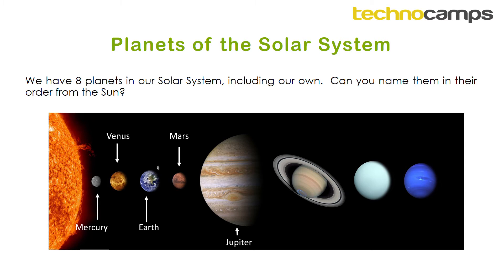The next planet in our solar system is Saturn, very famous and recognisable because of its really impressive ring system, which is made of smaller bits of rock, ice and dust. Then we get to Uranus, our next gas giant, and Neptune toward the edge of the solar system where it's very, very cold. Those are all our planets in order from the Sun.